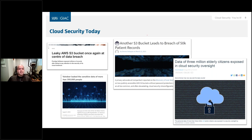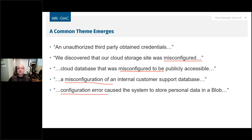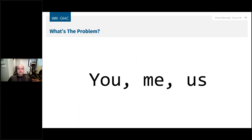Taking a look at the breach examples, there's a common theme: misconfiguration, misconfiguration, configuration error. Somebody somewhere is clicking something or making a mistake in the console, or something is wrong in infrastructure-as-code. And it's simple what the problem is here — it's all of us. It's you, it's me, it's us. There's a lot of human component here making mistakes. We're not hearing a lot about providers failing and exposing every single customer — a lot of these breaches are driven by human error.